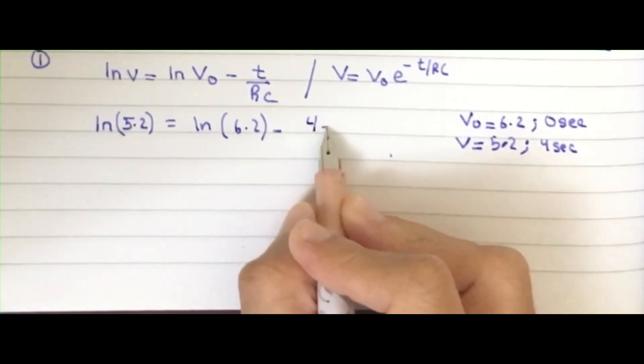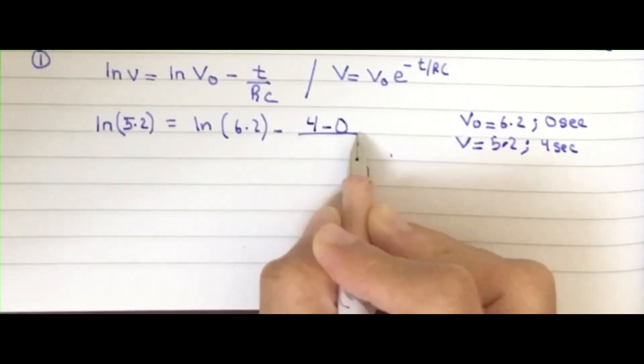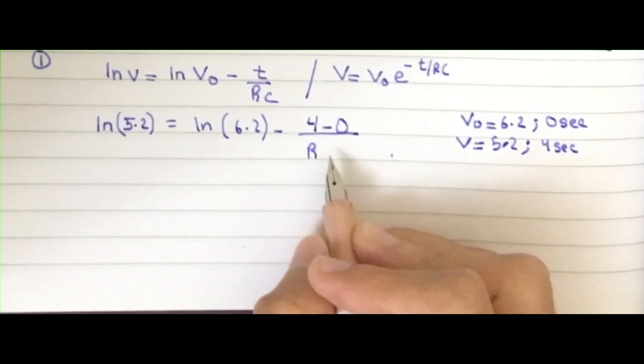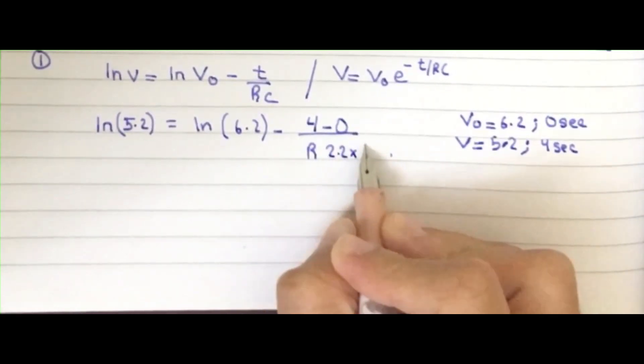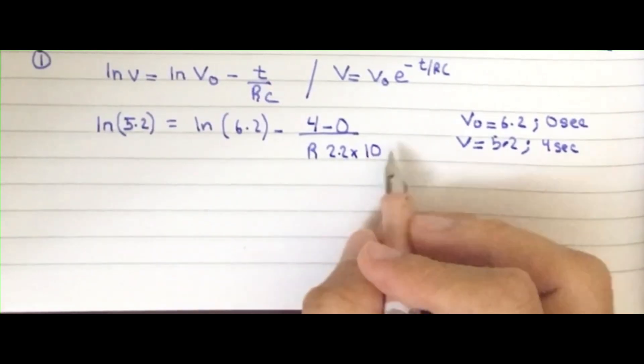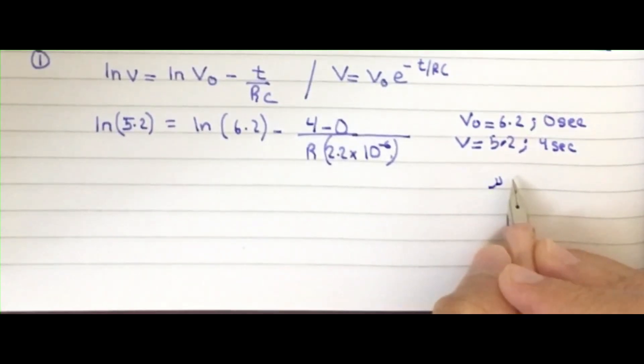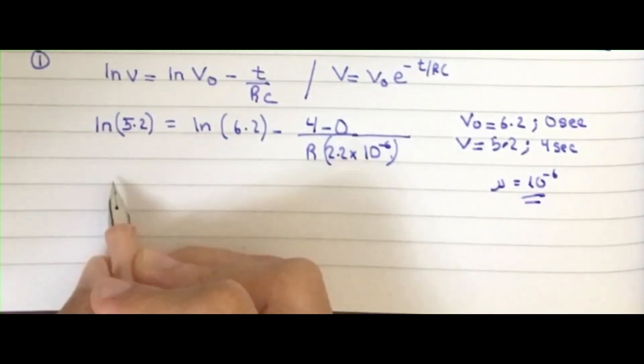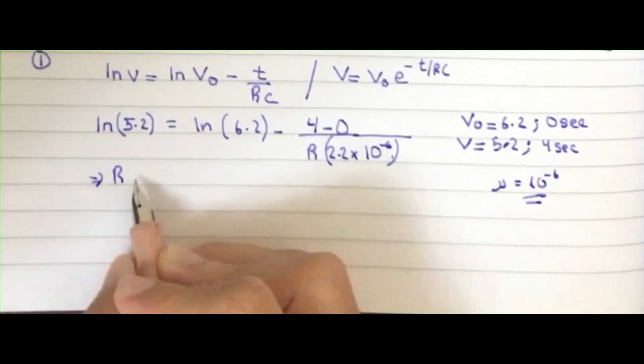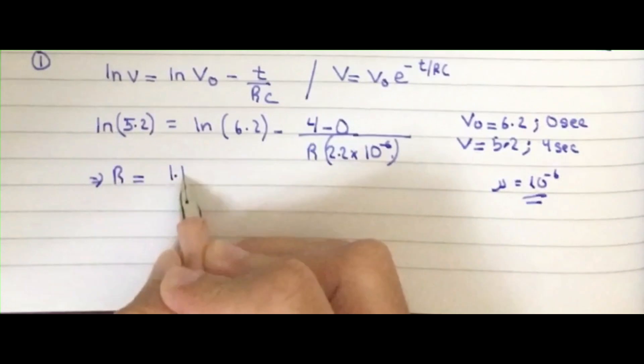Then you have R, which is the resistance you have to find, and you have the capacitor's value which is 2.2 times 10 raised to power minus 6. The symbol is indicating minus 6. When you calculate it, you get your R value as 1.1. I have rounded off the value.